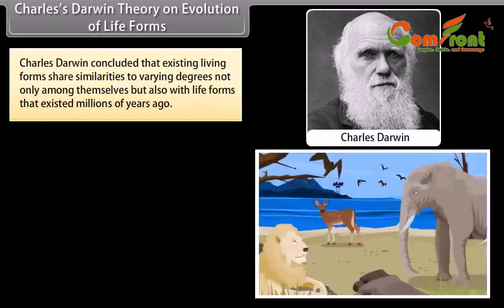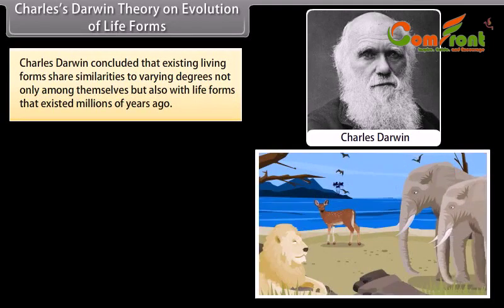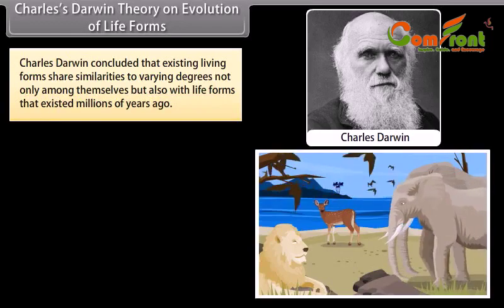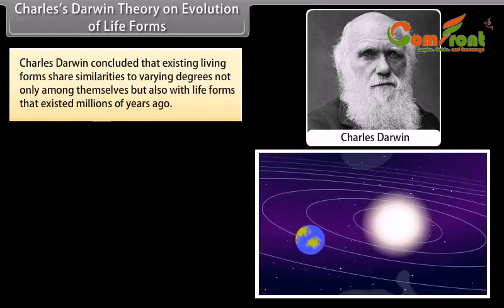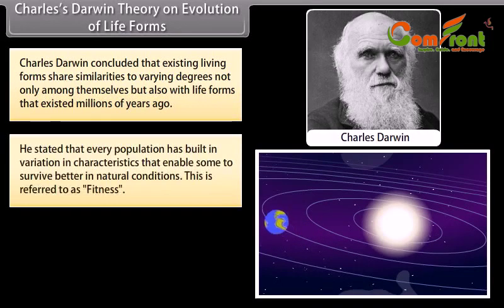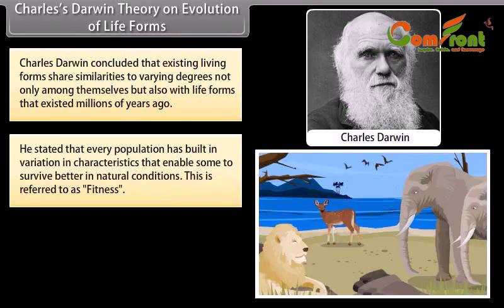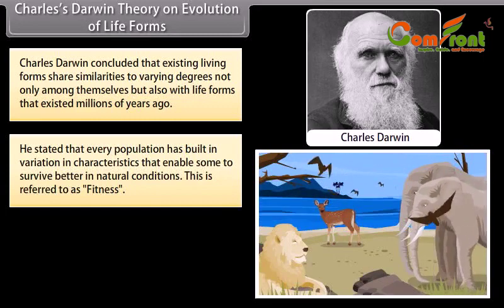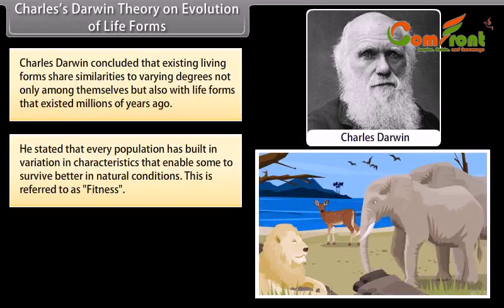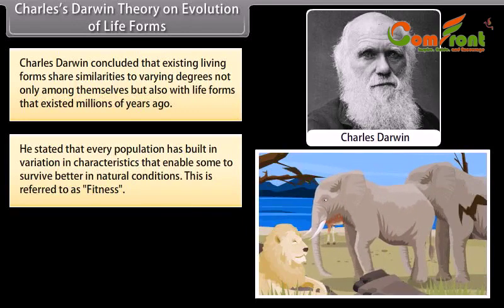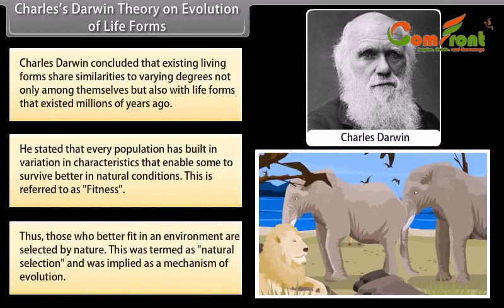Charles Darwin concluded that existing living forms share similarities to varying degrees — not only among themselves but also with life forms that existed millions of years ago. He stated that every population has built-in variation in characteristics that enabled some to survive better in natural conditions, referred to as fitness. Those who better fit an environment are selected by nature — this was termed natural selection and implied as a mechanism of evolution.